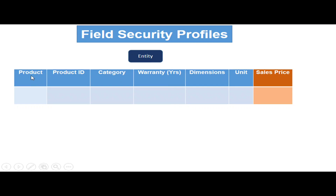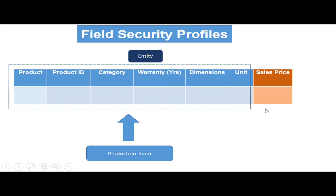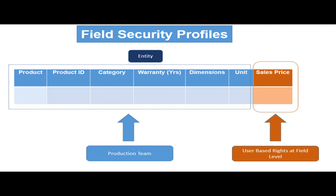This entity has seven fields: product, product ID, category, warranty, dimensions, unit, and sale price. I have changed the color of the sale price field. This means that if I grant access of this entity to a team — say the production team — I may want some distinct users to view the sale price whereas other users may not see it.